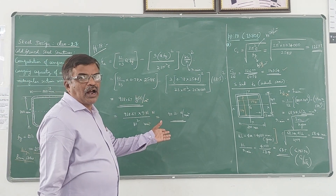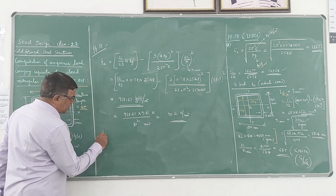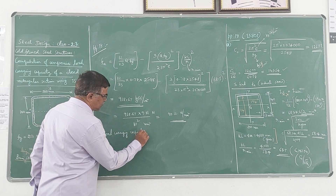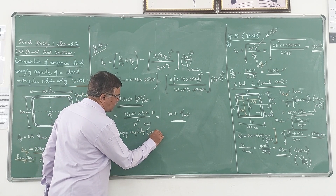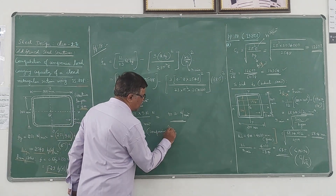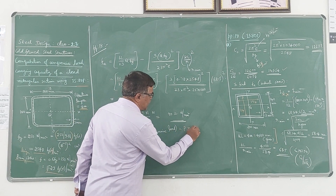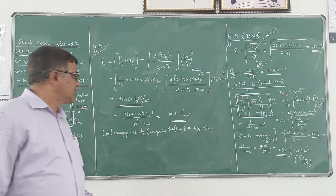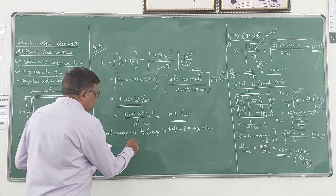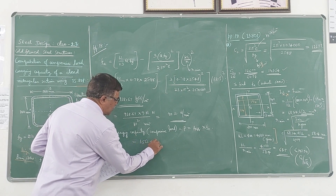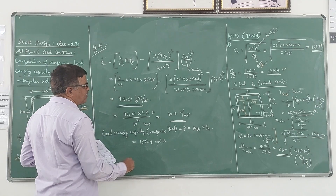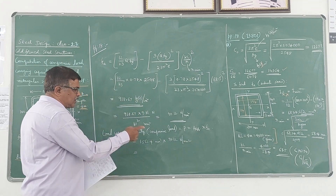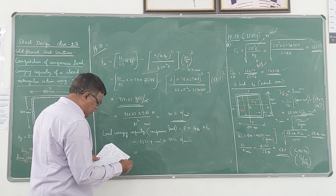Finally, we have both values: the effective area and the actual stress. Their product gives the compressive load carrying capacity: P = A_effective × Fa = 1562.4 mm² × 90.12 N/mm². Simplifying, you get the load in Newtons, which can be converted to kilonewtons.